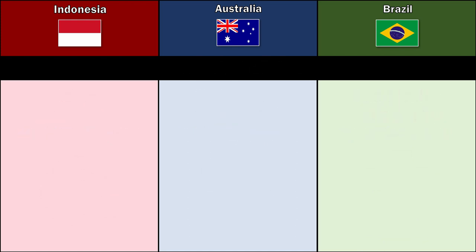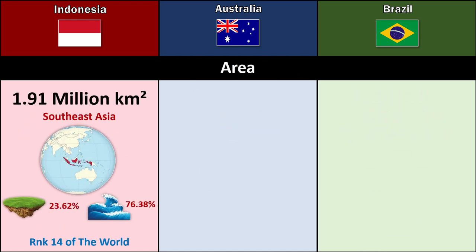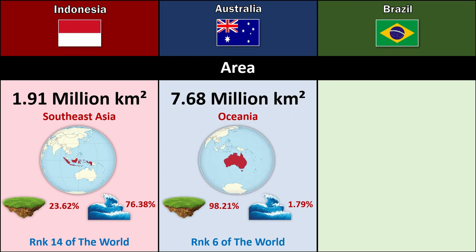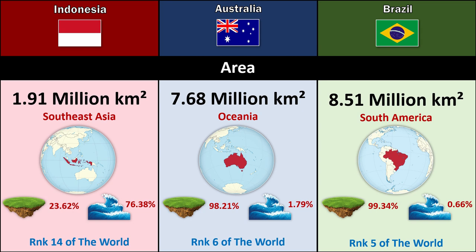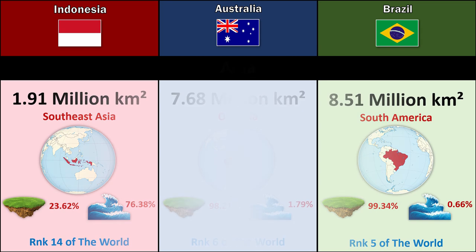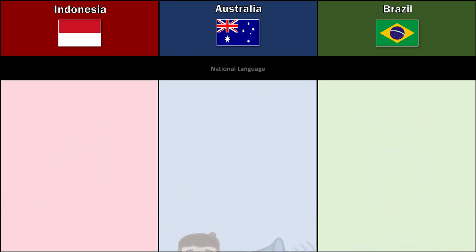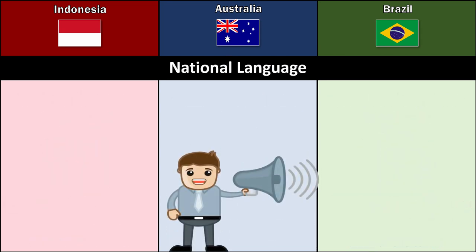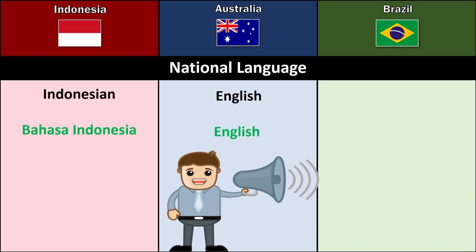Area: Indonesia 1.91 million square kilometers, Australia 7.68 million square kilometers, Brazil 8.51 million square kilometers. National Language: Indonesian, English, Portuguese.